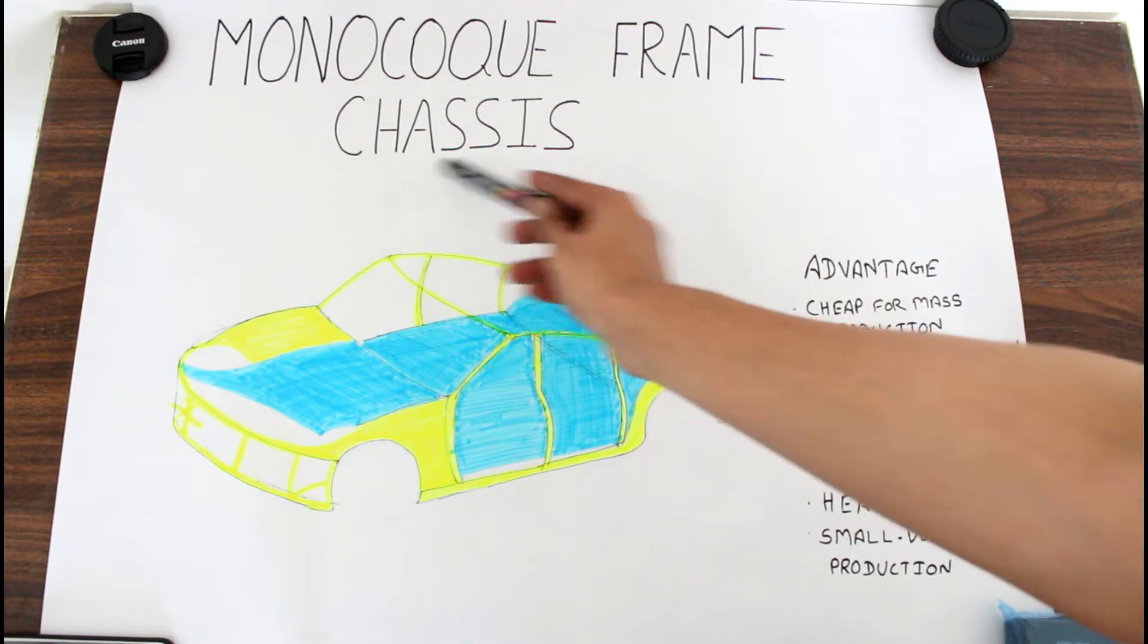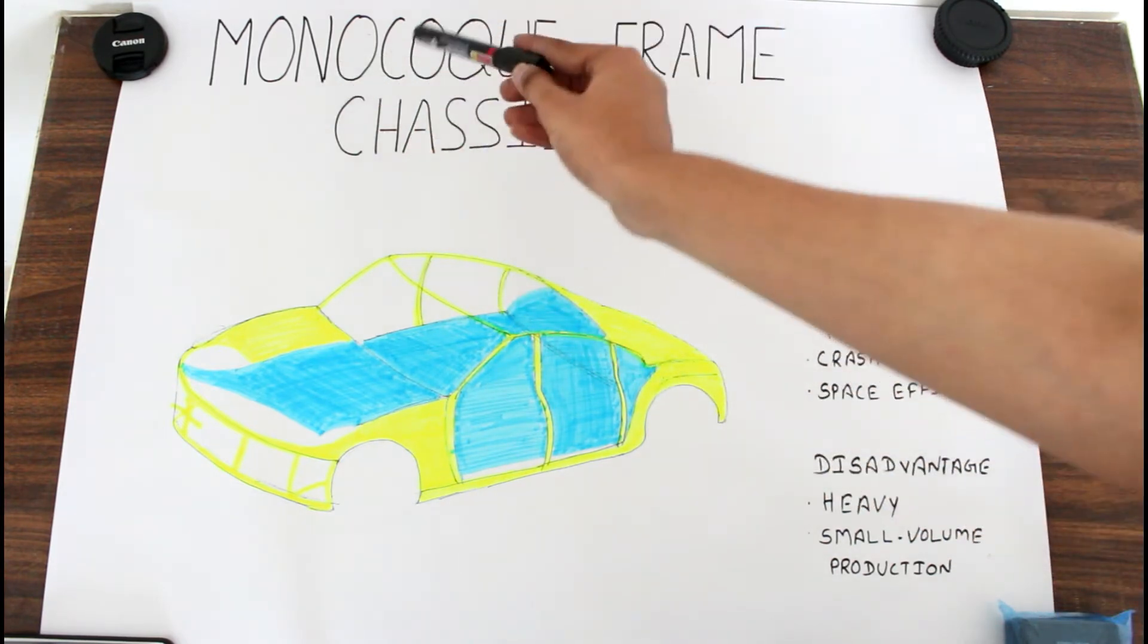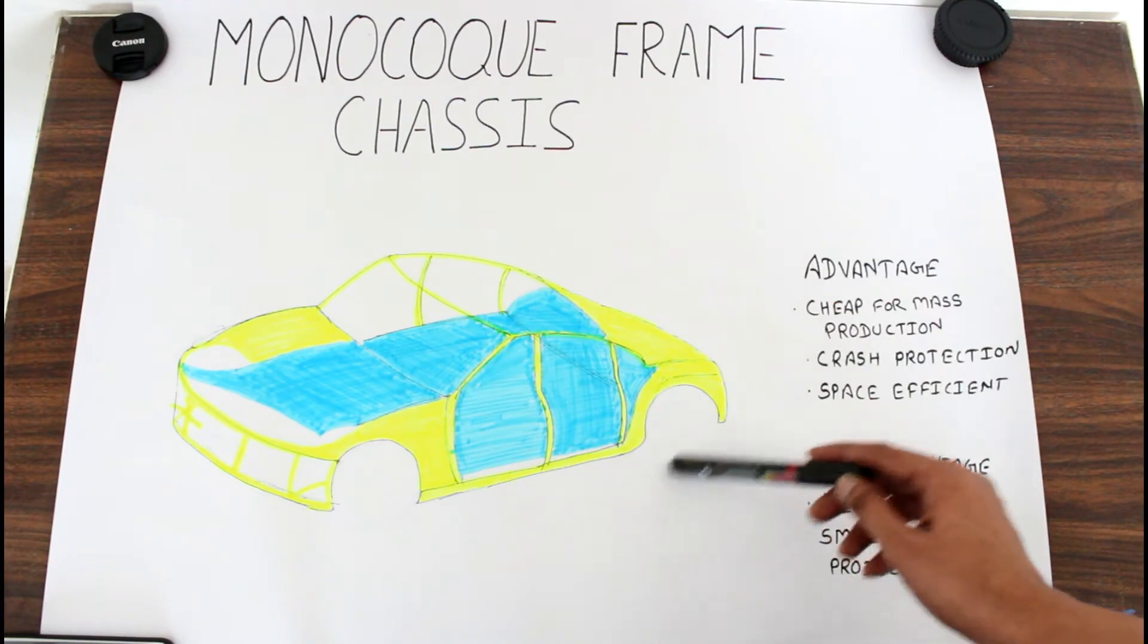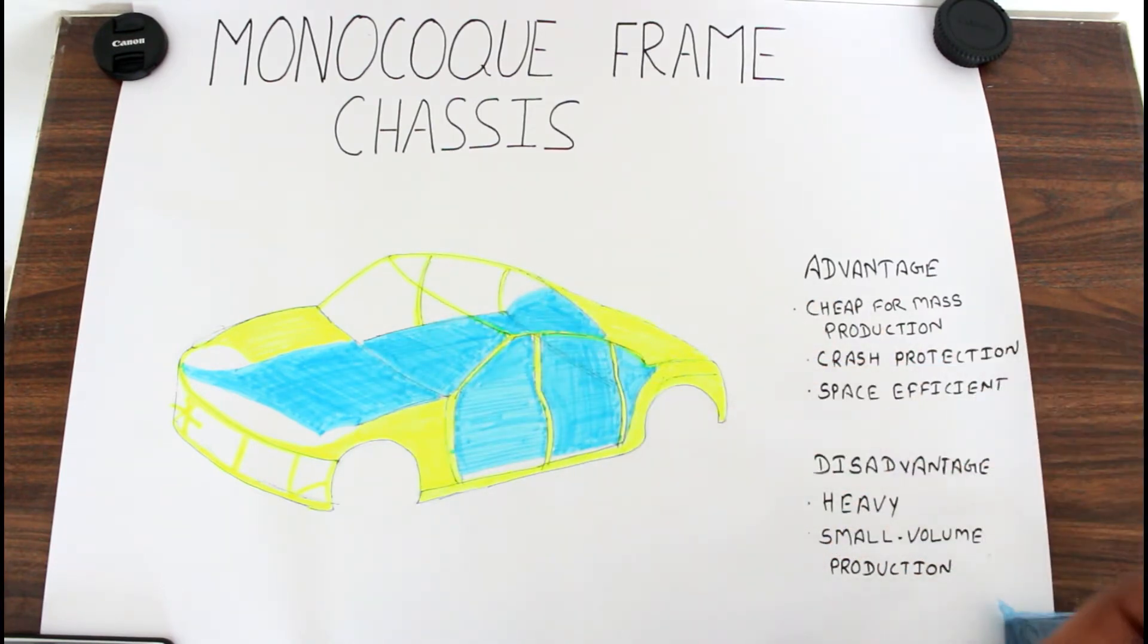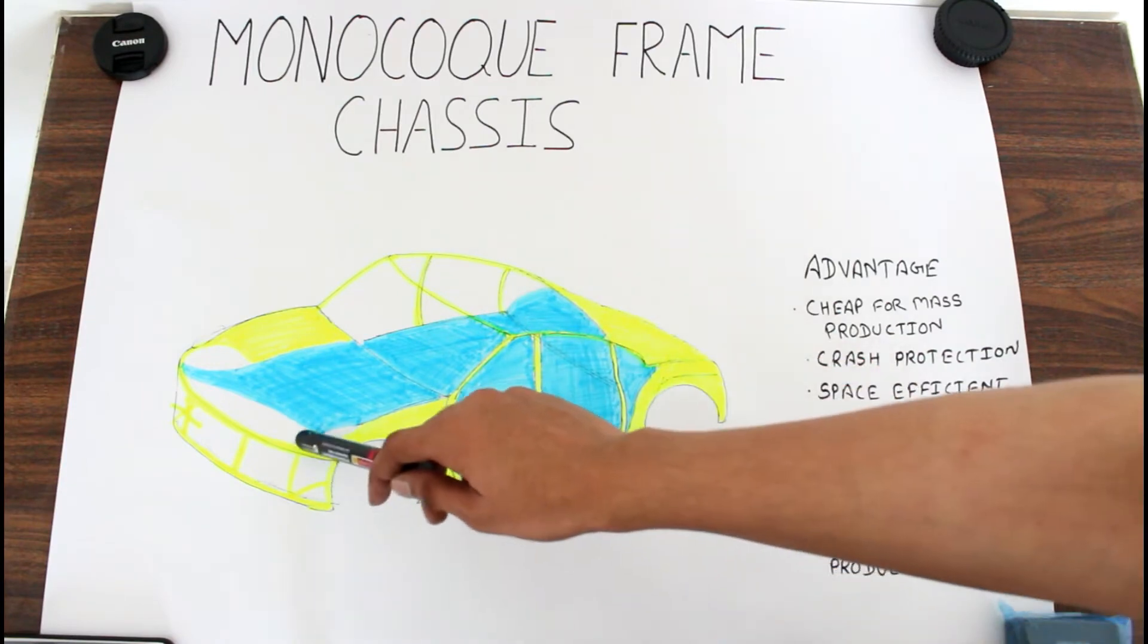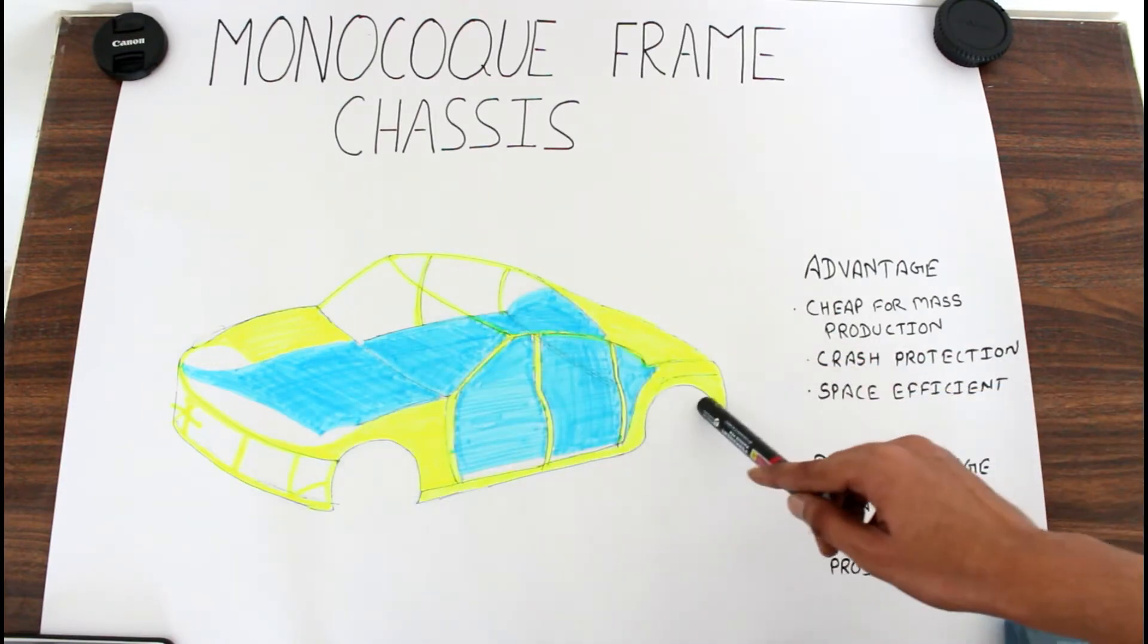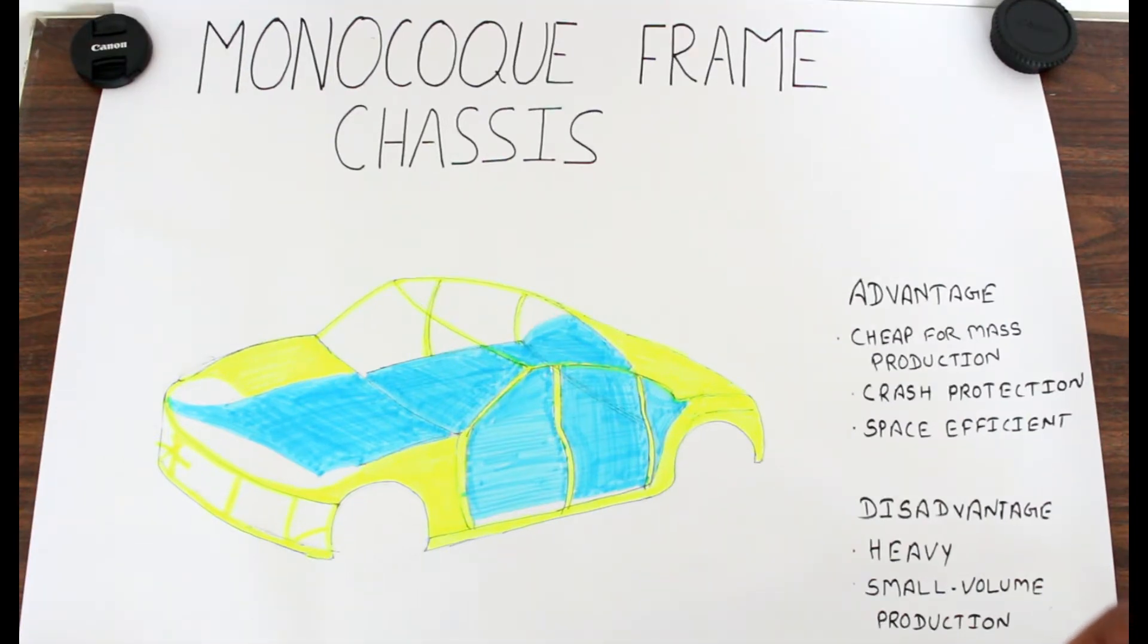Our today's topic is monocoque frame chassis. Monocoque, as the name suggests, mono means one. It's a one-piece structure which defines the overall shape of the car. You can see this chassis has the look of the overall car, while other chassis types provide only the stress members and need to build the body around them.